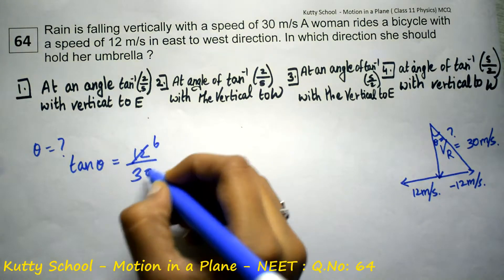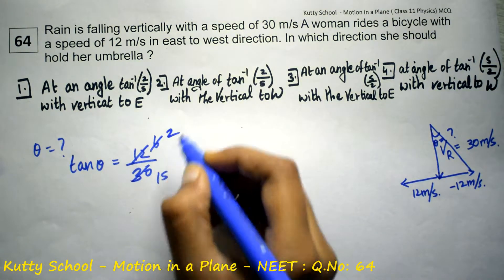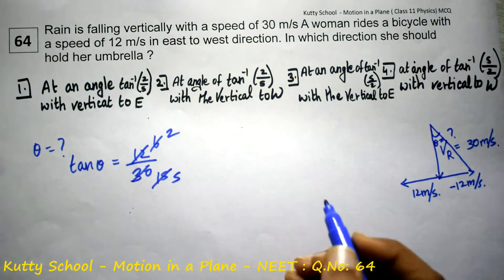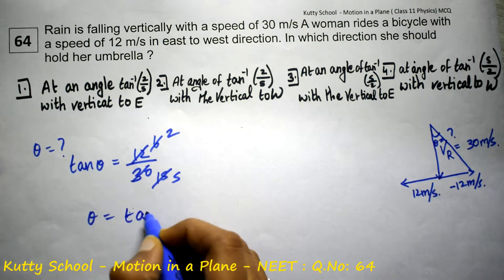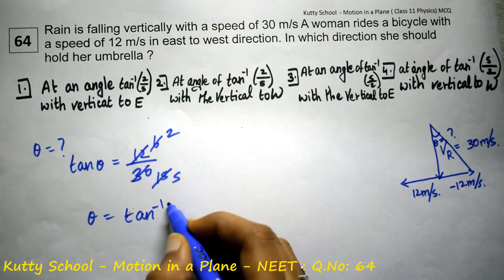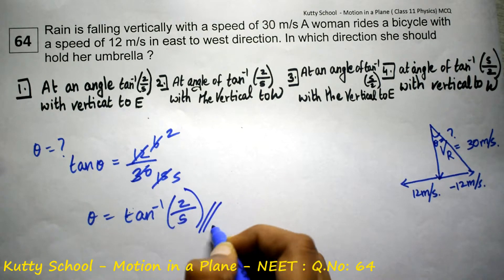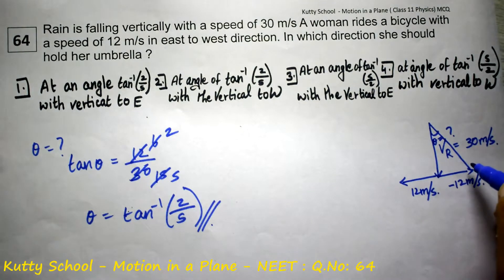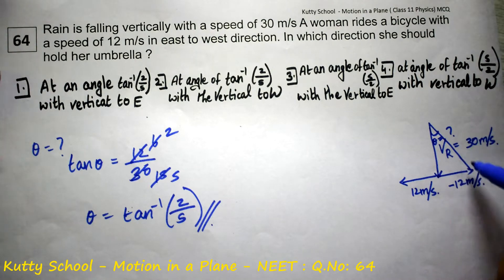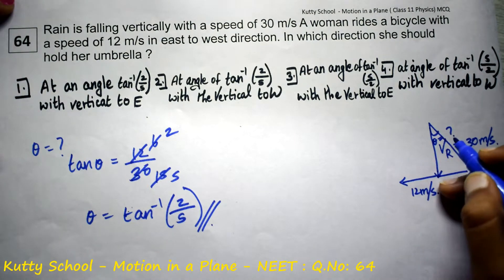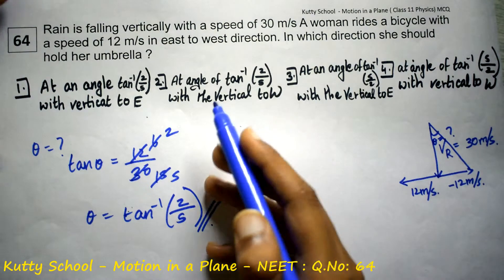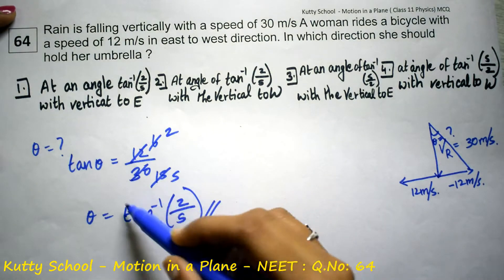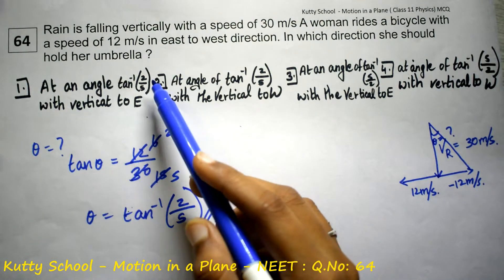Simplifying: 12 by 30 gives 6 by 15, and further gives 2 by 5, since 3 twos are 6 and 3 fives are 15. So theta is equal to tan inverse of 2 by 5. At an angle of tan inverse of 2 by 5.